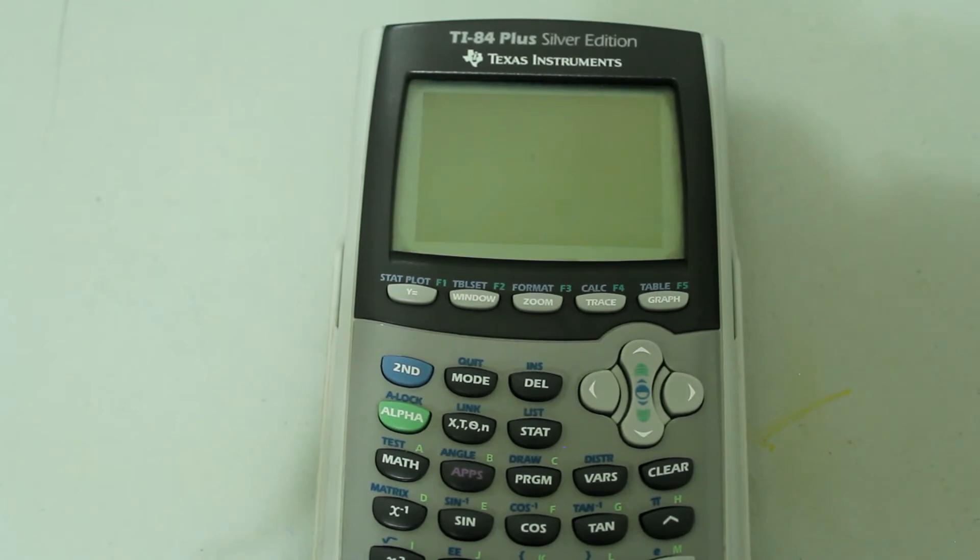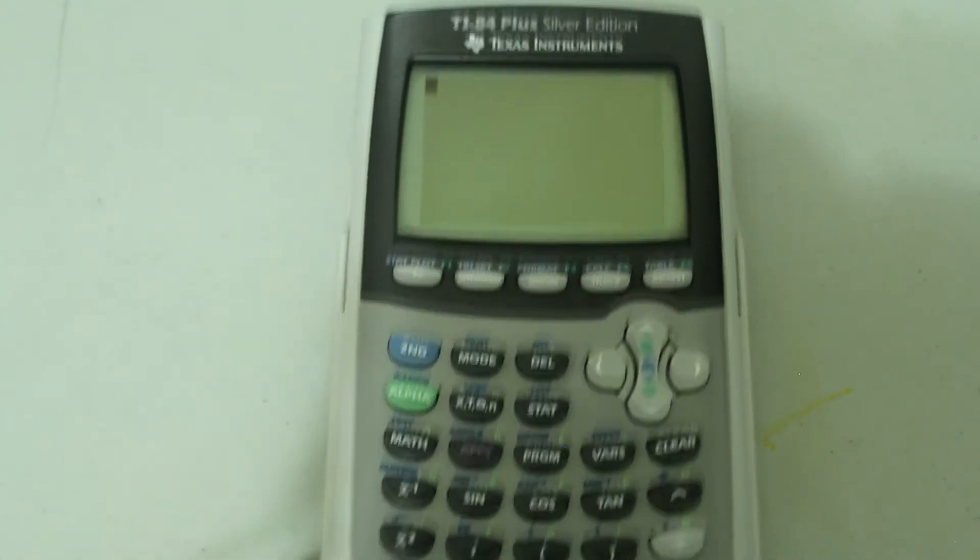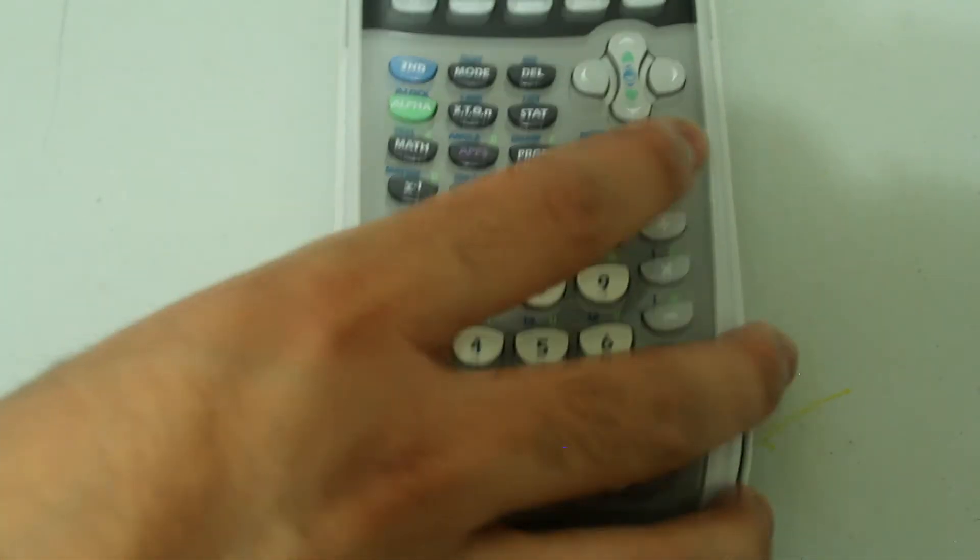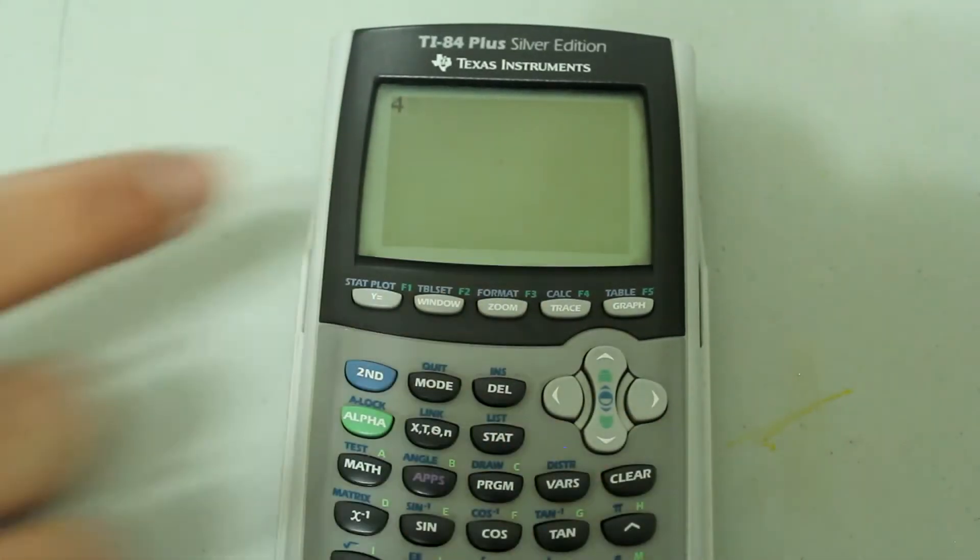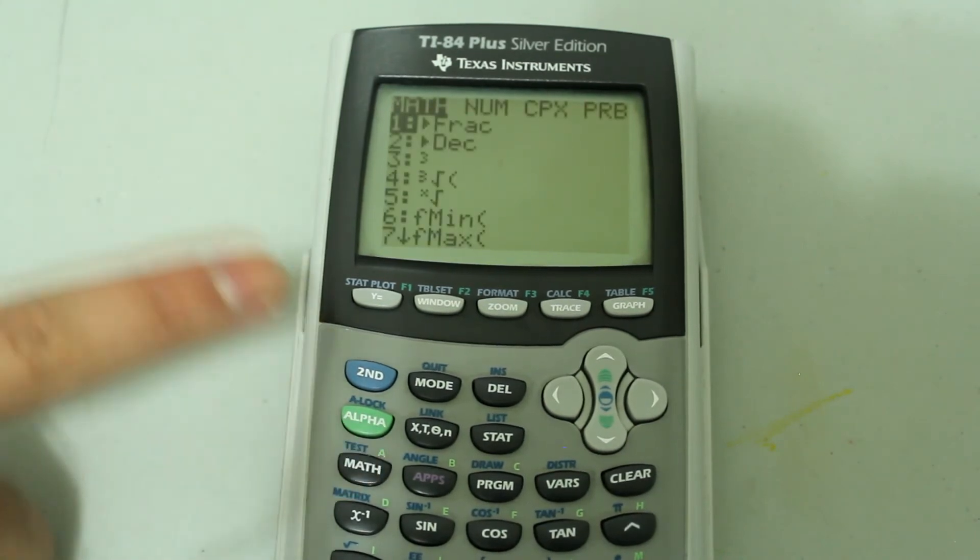Before you press the math button, type in the index for the radical. So I will type in four, so it looks like this so far. And then press the math button and once again select the fifth option.